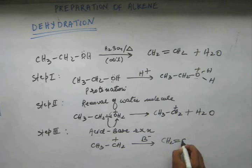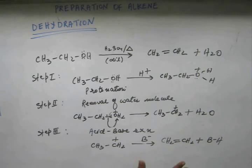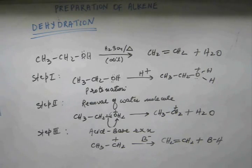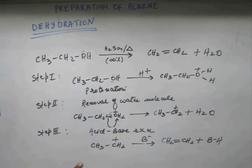CS2 will be forming a bond, and this base and the hydrogen abstracted from here will form BH. This is what we want. These are the three steps involved in the dehydration reaction: the first step would be protonation, the second step is removal of water, and the third step is the acid-base reaction.